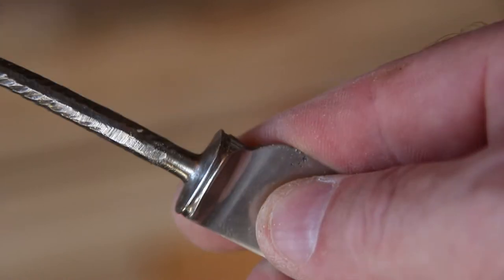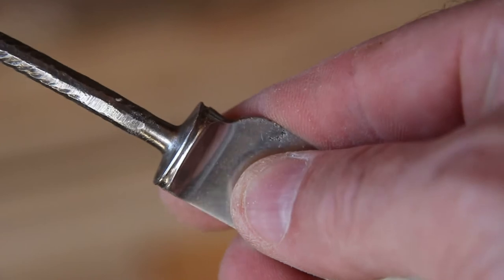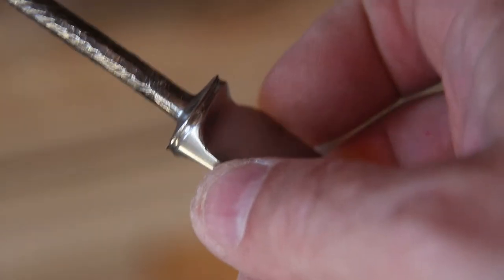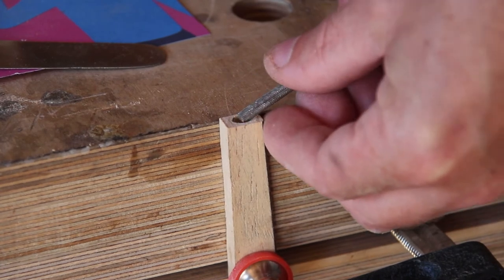Looking at the shoulder of this knife it's slightly conical so I need to accommodate that on the handle otherwise there will be a little gap around the edge which I don't want. My chisels are a bit too big so I'm going to use a needle file.